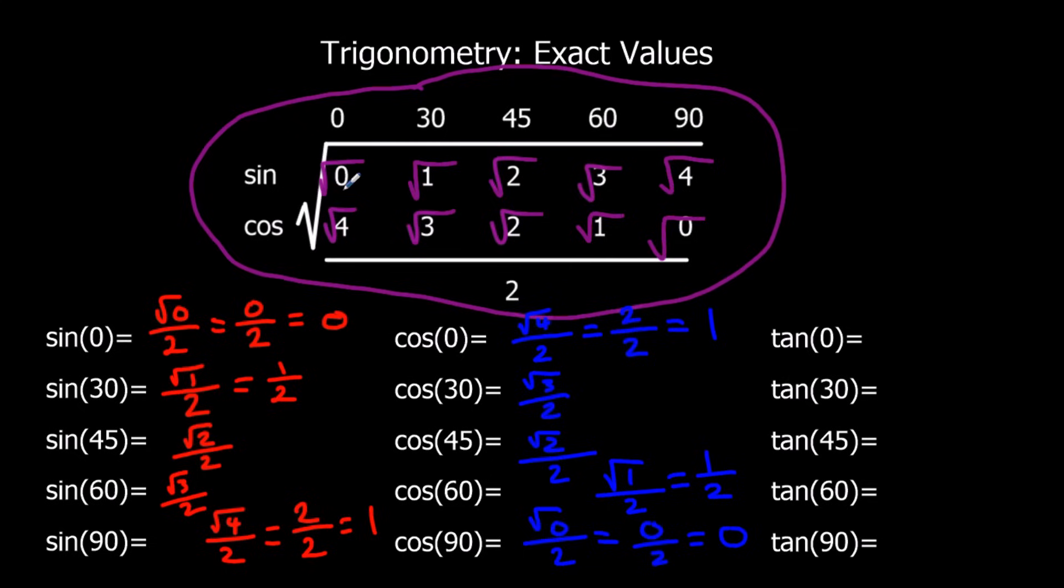Tan is these two divided by each other. So tan 0 is root 0 over root 4, which simplifies to 0 over 2, which is 0. Half of 0 is 0.